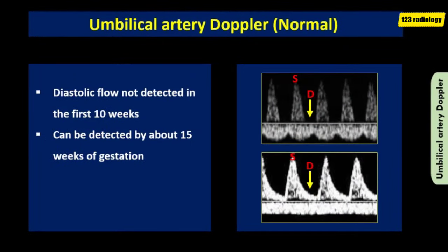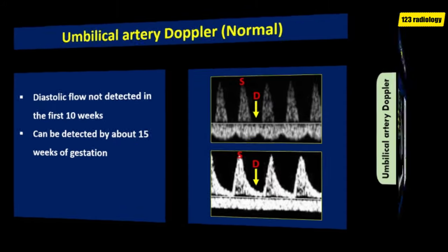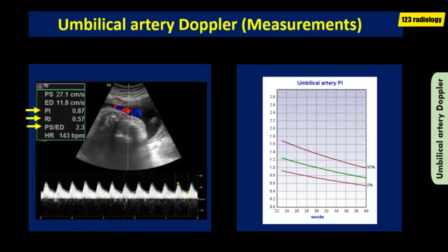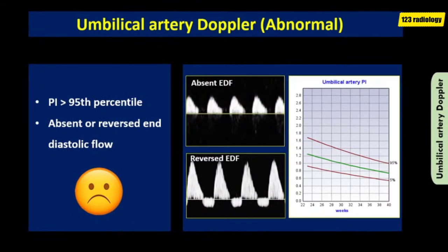In normal pregnancy, diastolic flow of the umbilical arteries cannot be detected in the first 10 weeks of gestation due to incomplete villus maturation, but it can be detected by about 15 weeks with progression of pregnancy. The pulsatility index of the umbilical artery reflects the resistance to flow within the placenta and is measured and compared to gestational age on charts. A normal pulsatility index should be below the 95th percentile for gestational age. In an abnormal or insufficient placenta, the resistance will remain high, reflected by a pulsatility index above the 95th percentile.